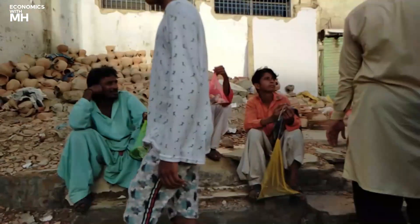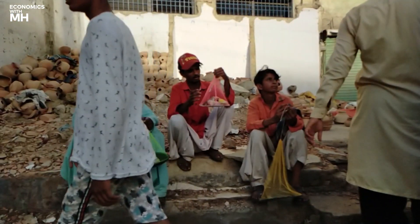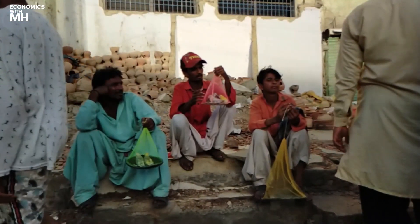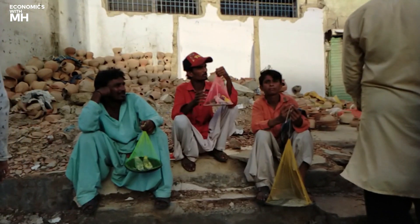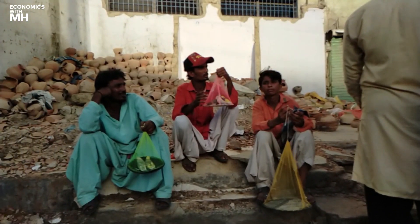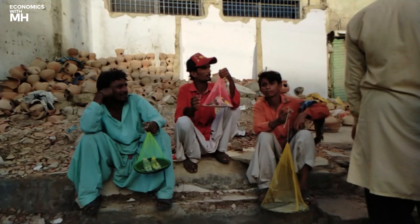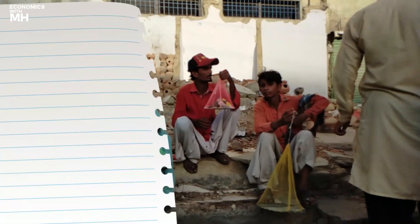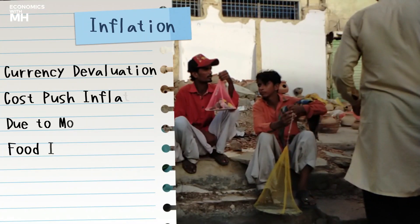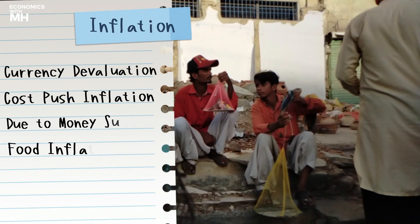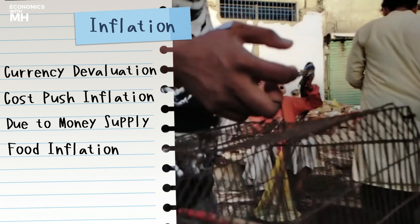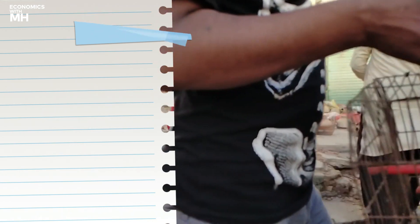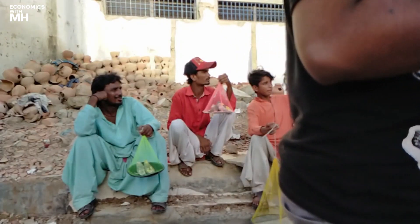Before going to the causes of inflation in Pakistan, let's know the types of inflation we are facing. On all types of inflation, I'll make a separate video, but for now we will only discuss the types which our country is facing currently. First is currency devaluation inflation. Second is cost-push inflation. Third is inflation due to increased money supply. And fourth is food inflation.